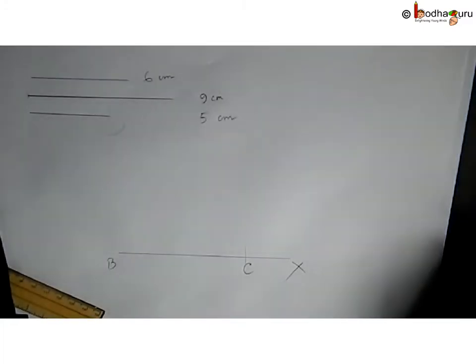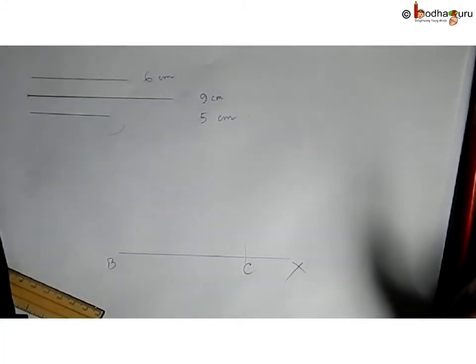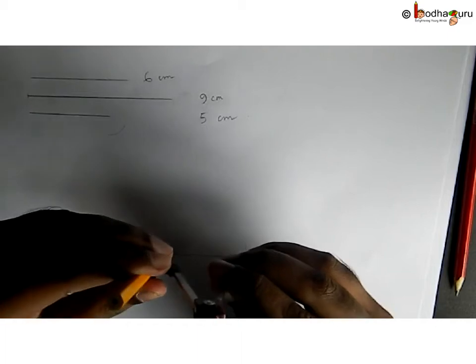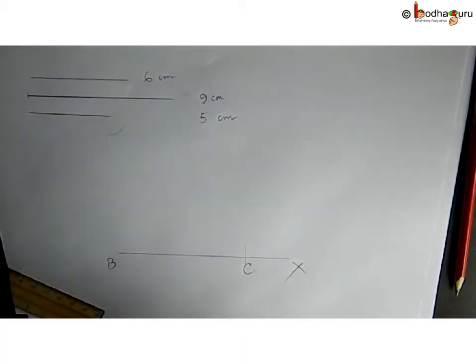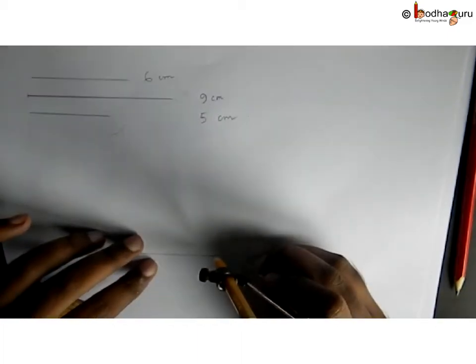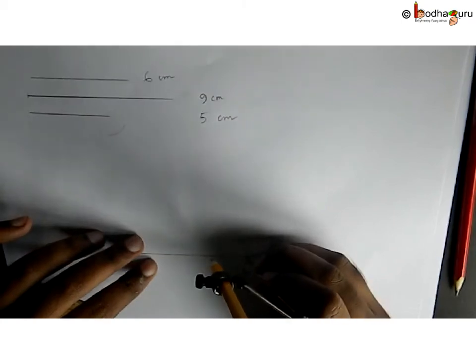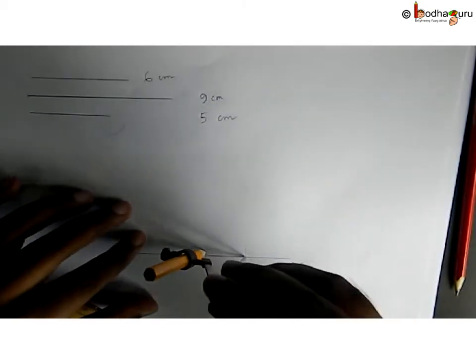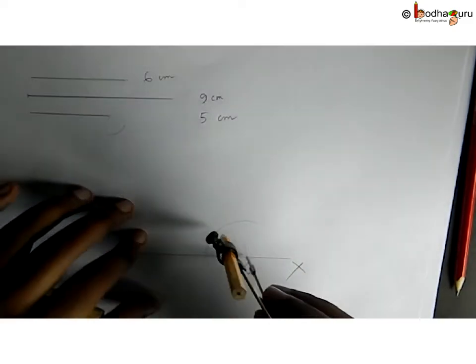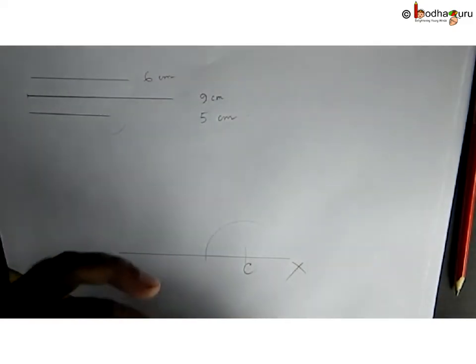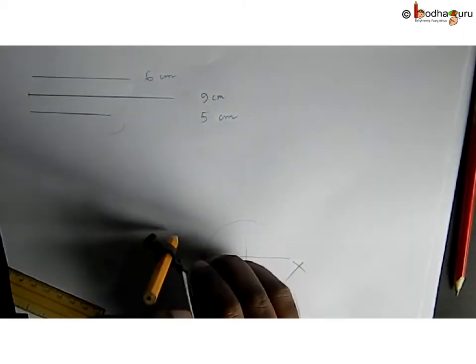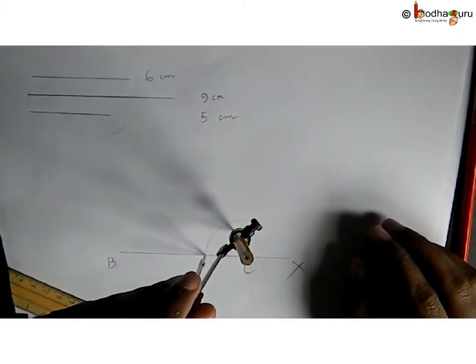Now we draw a 60 degree angle at C. We take any radius in compass, put needle on C and draw an arc. Then put needle on this point and draw a small arc that crosses previous arc. This is 60 degrees.